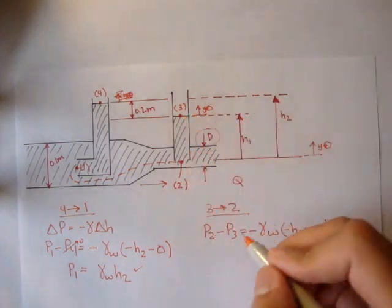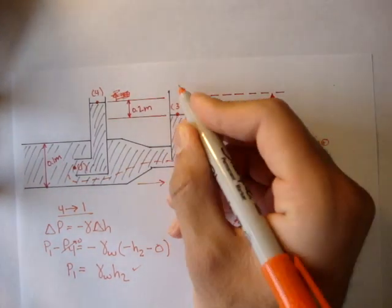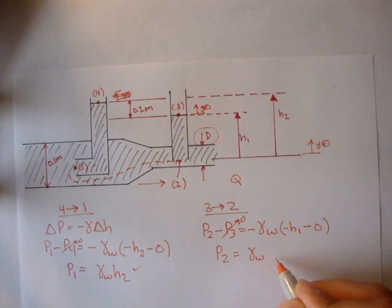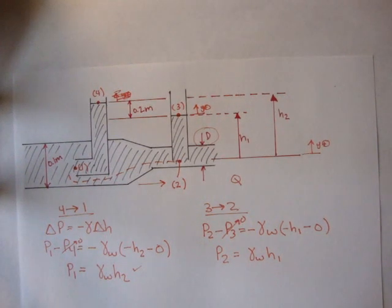And we know pressure at three is zero because it's open to the atmosphere. So we can say pressure at two is equal to gamma of water times h1.